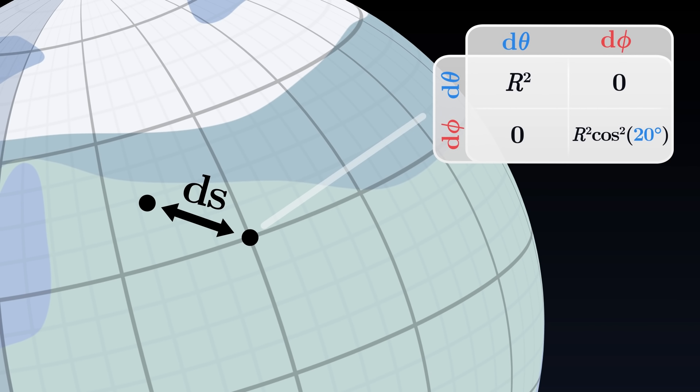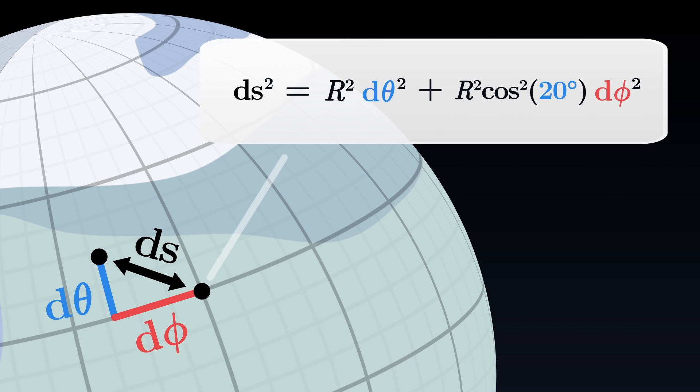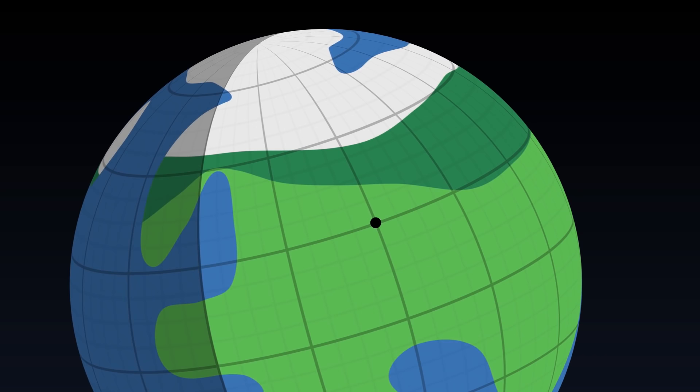And if we want to measure small distances around this point, we only need to sum each component of the table multiplied by the differences in the coordinates. This sum gives us the value of the square of the distance between the two points.